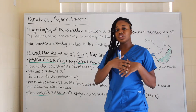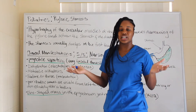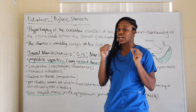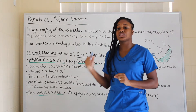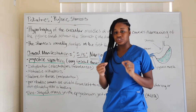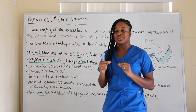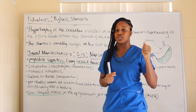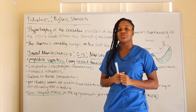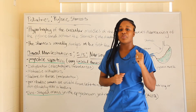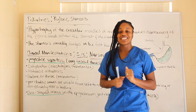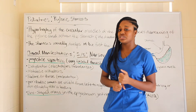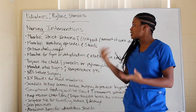Many signs and symptoms overlap with different diseases, but the two that stand out most with pyloric stenosis are projectile vomiting and the olive-shaped mass — those are your dead giveaways. On your test, if they mention an olive-shaped mass or projectile vomiting, automatically think pyloric stenosis, because ten times out of ten that is going to be the answer.